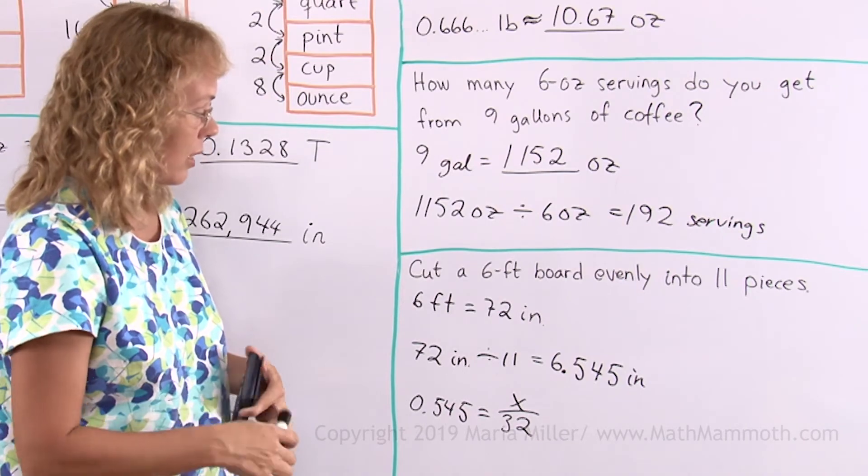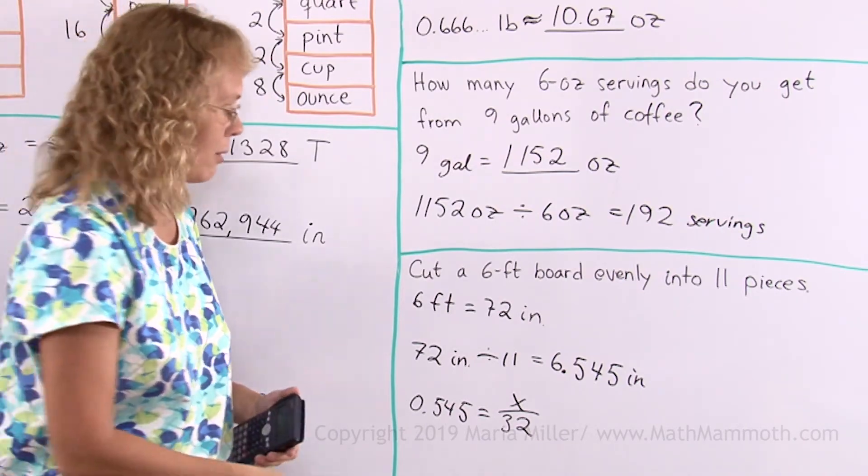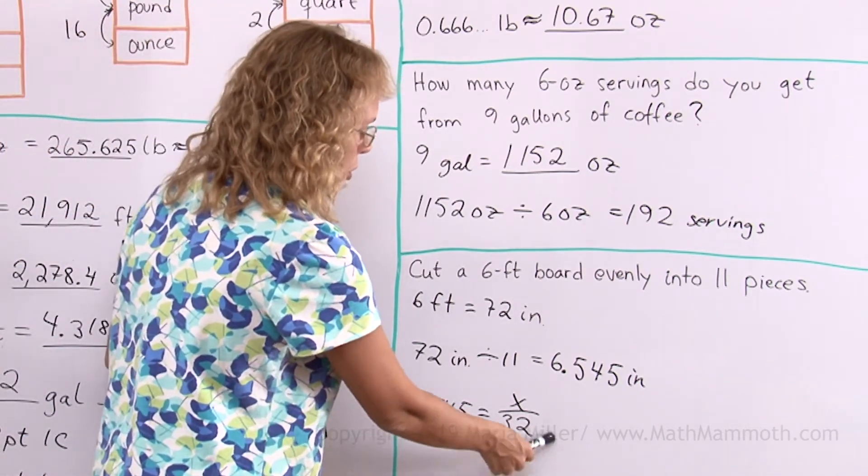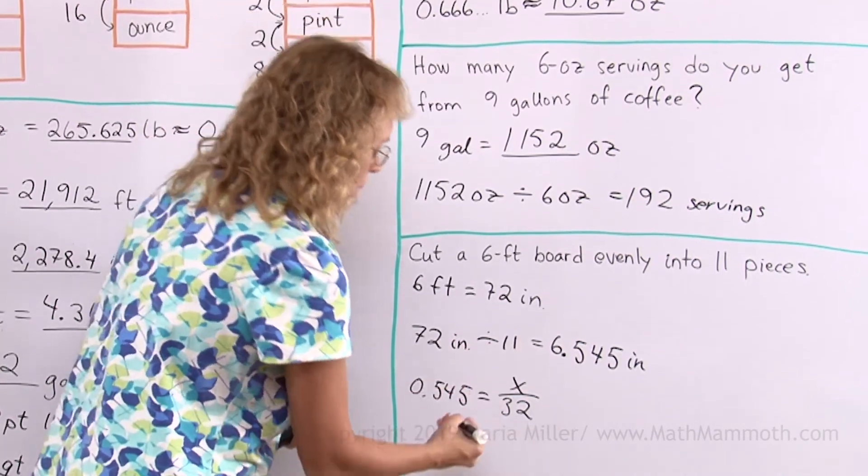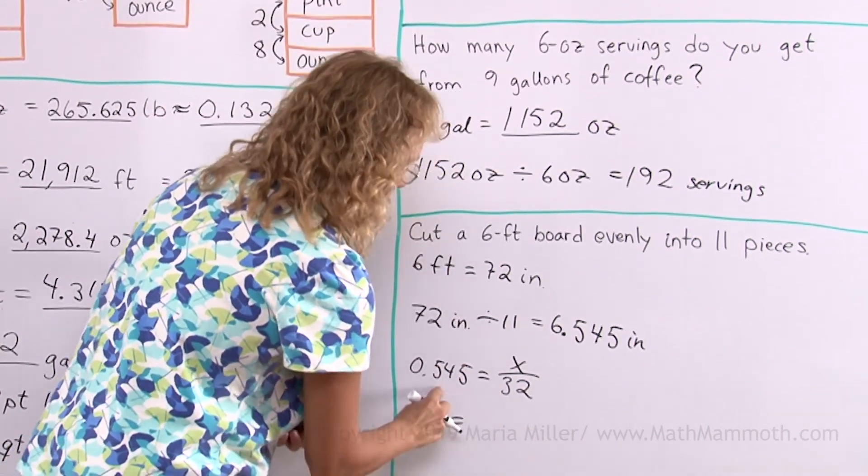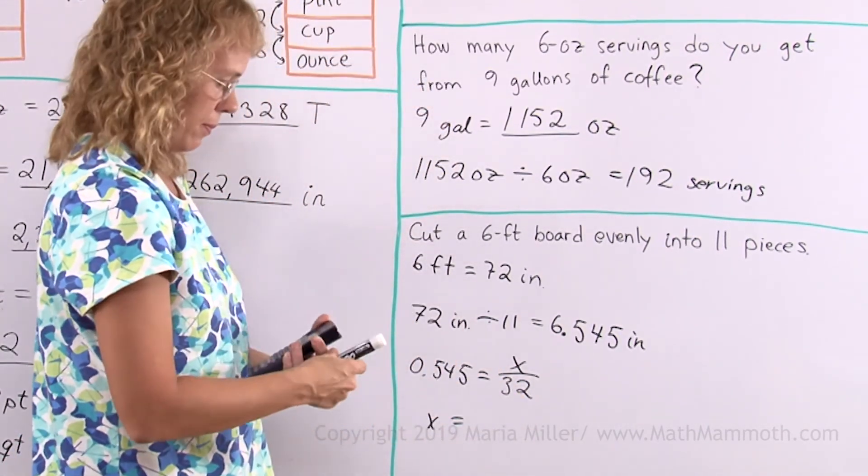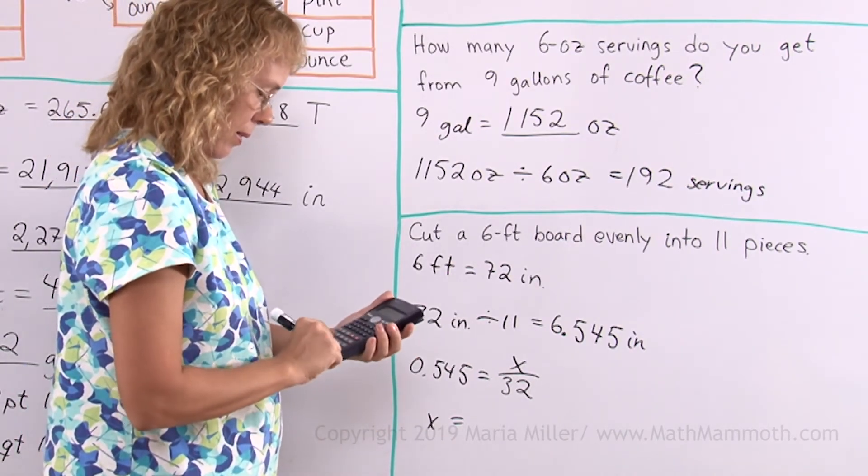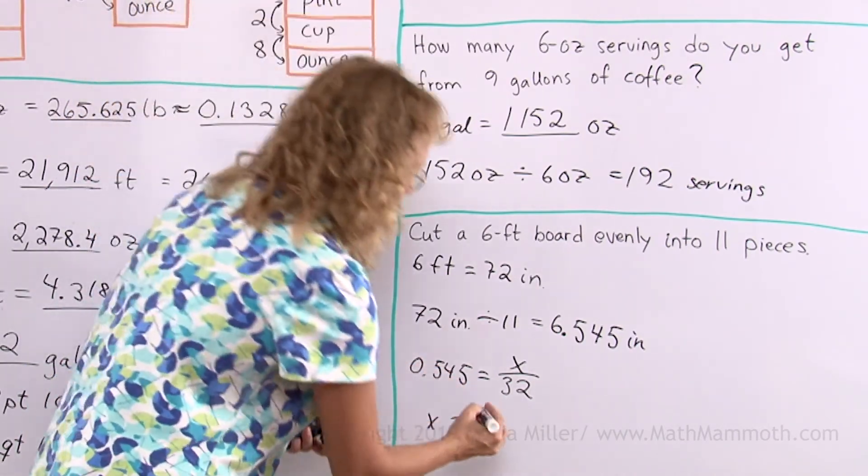This simple equation is solved by multiplying. We multiply both sides by 32. Then we will get x equals this number times 32. So I go... And the answer is 17.44.